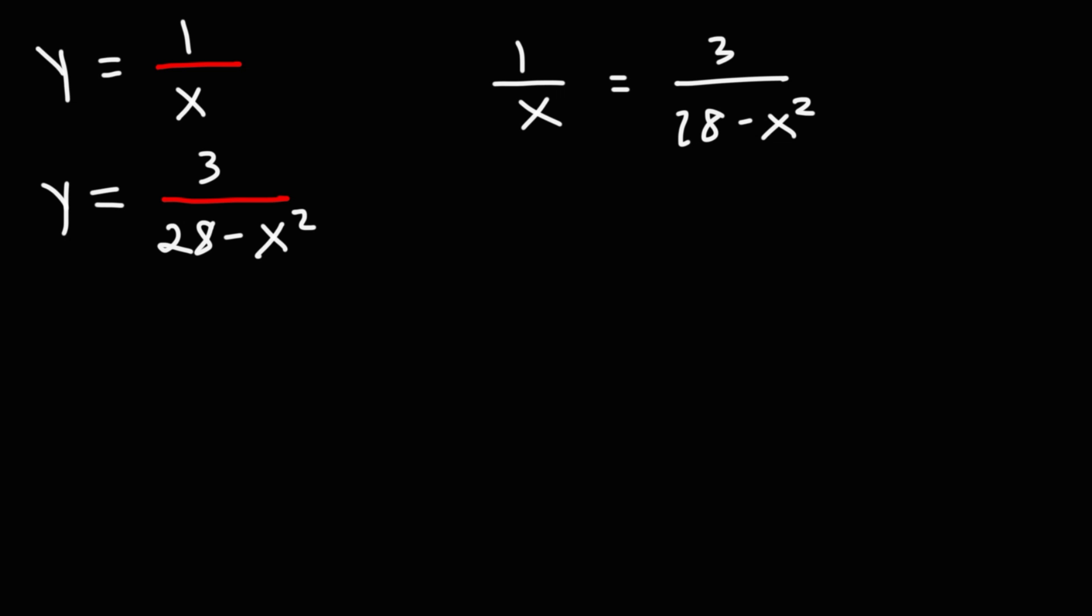Whenever you have two fractions separated by the equal sign, you can cross multiply. So here we have 3 times x, which is 3x, is equal to 1 times 28 minus x squared. So this is what we now have.